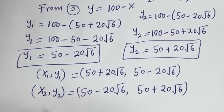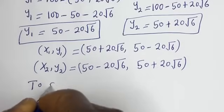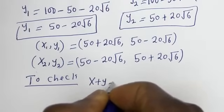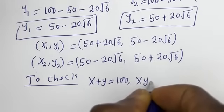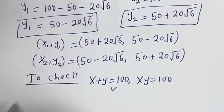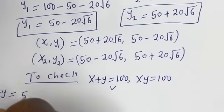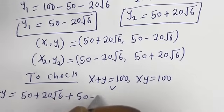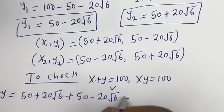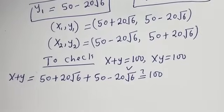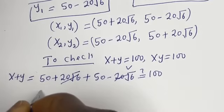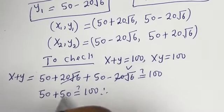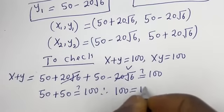We can check to confirm if this answer is right. To check, we have the given equations: x plus y equals 100 and xy equals 100. For the first equation: x plus y equals (50 plus 20√6) plus (50 minus 20√6). The 20√6 terms cancel, leaving 50 plus 50, which equals 100. This is true.